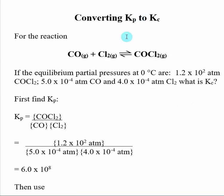So let's take another look at an example where we use the interconnection between Kp and Kc for a reaction. I give you some equilibrium partial pressures for the species involved in a particular reaction, and then I say calculate Kc.